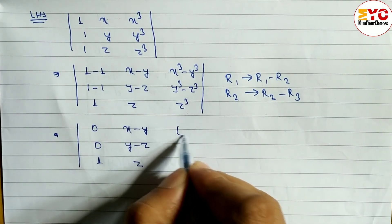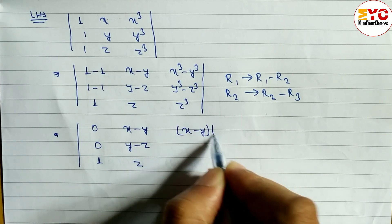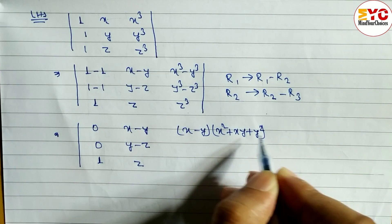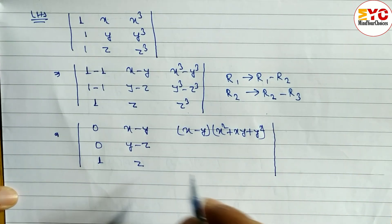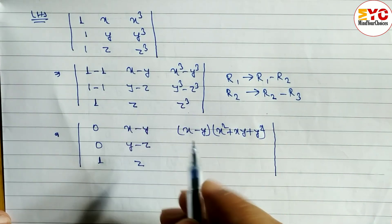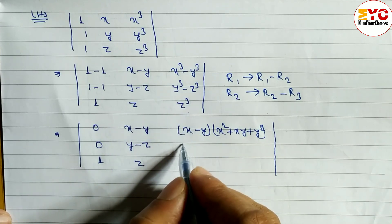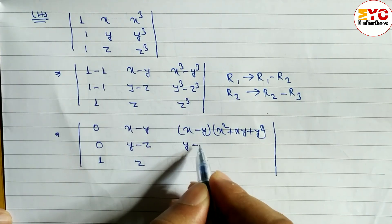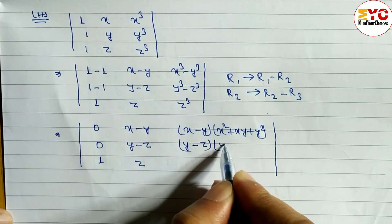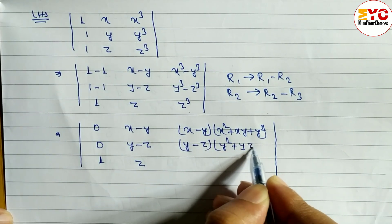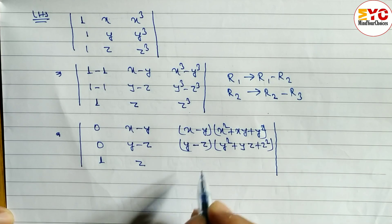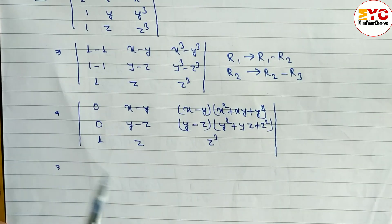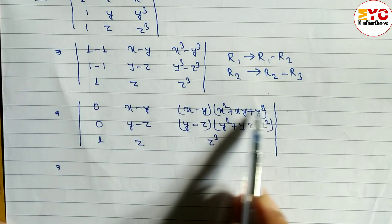Now what is the formula of a³ minus b³? We use the formula: x³ minus y³ = (x minus y)(x² + xy + y²). Similarly, y³ minus z³ = (y minus z)(y² + yz + z²). We apply these formulas to the respective entries.